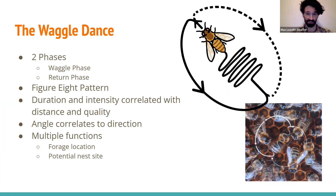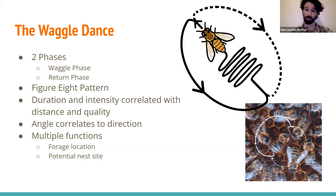The duration of the waggle phase corresponds to the distance of the resource — the shorter the waggle phase, the closer the resource. The intensity of the waggle tells foragers the quality of the resource, so a bee that has found a really good flower will waggle ferociously. The angle of the waggle run with respect to the pull of gravity in the hive informs foragers of the forage source's location relative to the angle of the sun. If a flower is located at X degrees to the left of the sun, the waggle phase will be at that same angle X relative to gravity. Hives are pitch black with no light inside, so honeybees rely on touch and chemical signals to communicate.